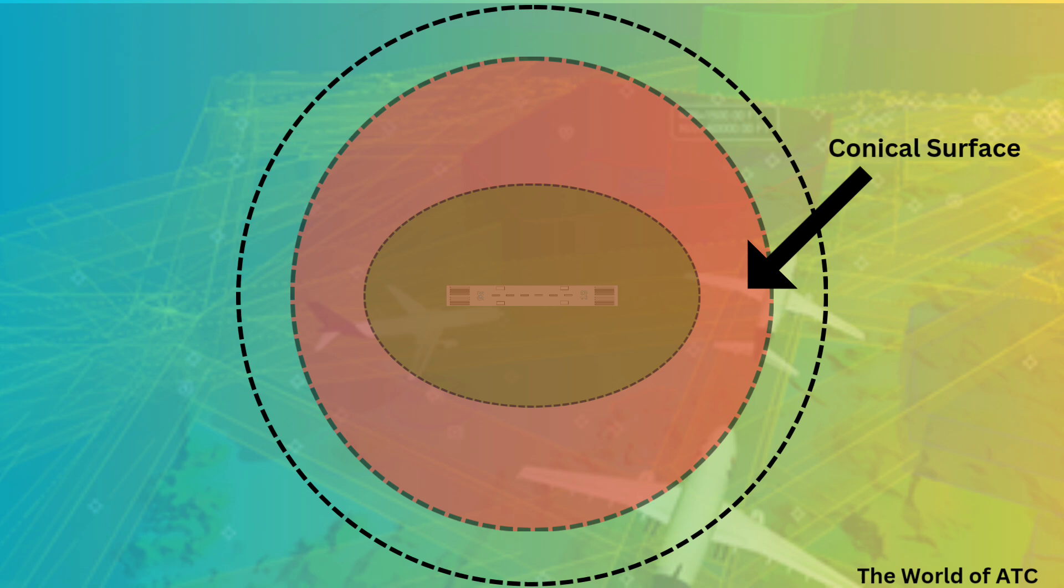And the reddish surface that is a circle which is joining the inner and outer horizontal surface, that is depicting the conical surface.